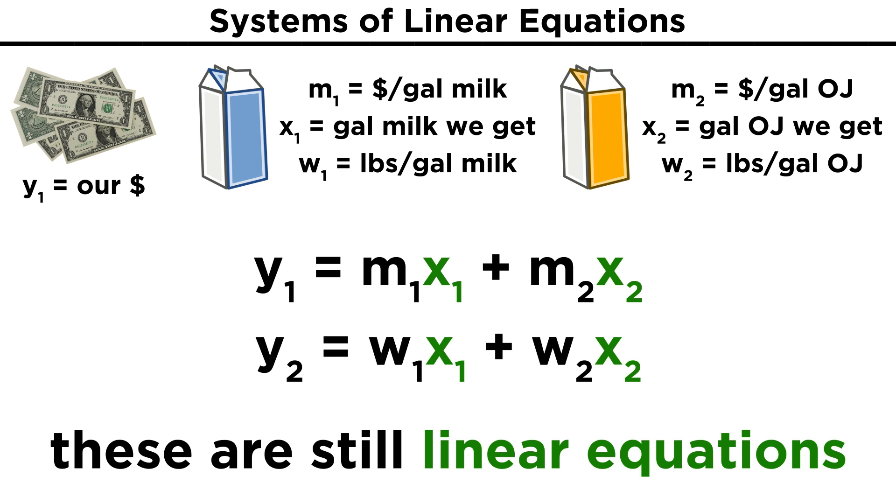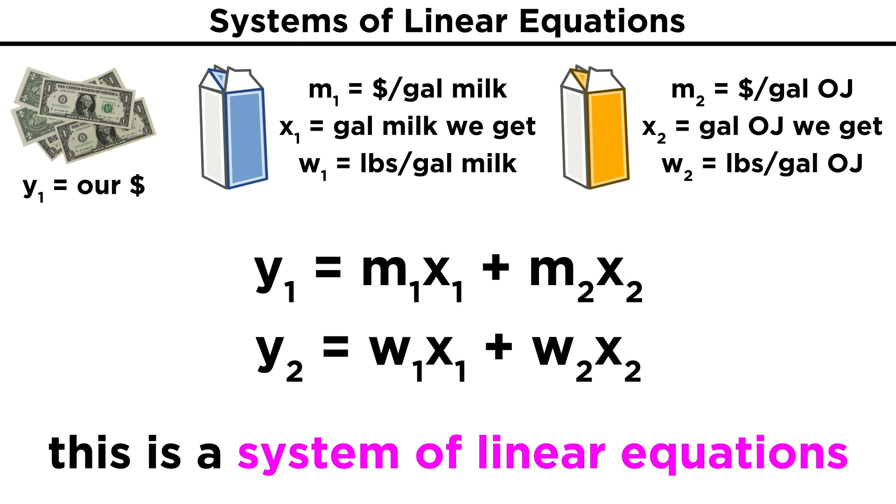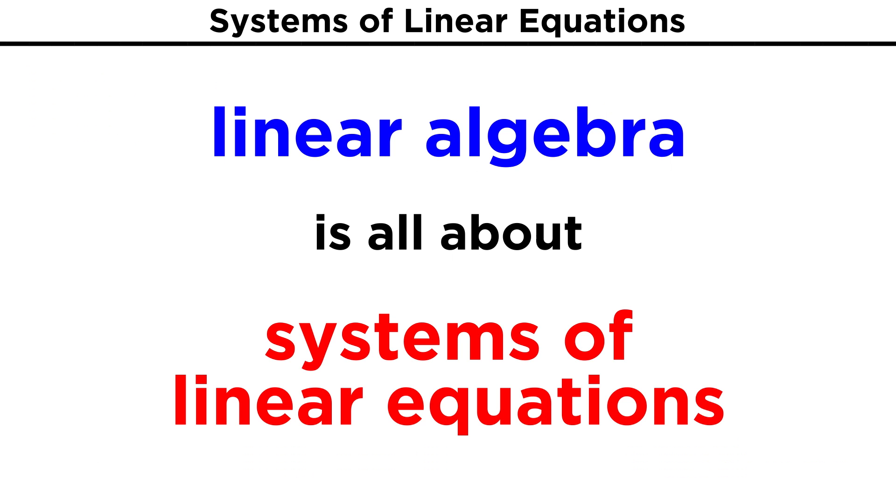This means that everywhere we see x, it is not being raised to any exponent. But since there is more than one equation, we can call this a system of linear equations. As you can probably guess, we will be looking at all kinds of different systems of linear equations as we study linear algebra.